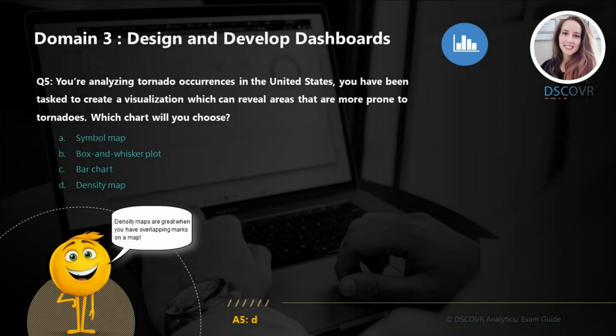For question number five, let's say you're analyzing tornado occurrences in the United States and you've been tasked to create a visualization which can reveal areas that are more prone to tornadoes. The answer here is D. Density maps are a great choice for visualizing patterns or trends in your data, especially geographic data that has a lot of overlapping marks.